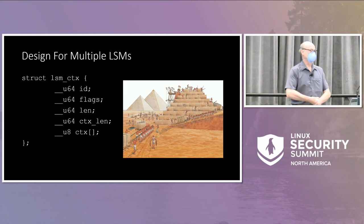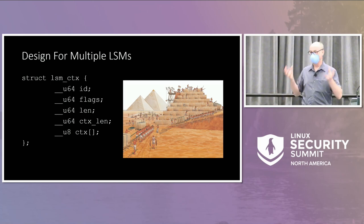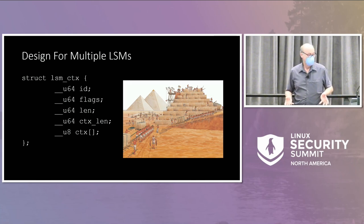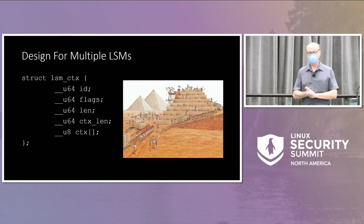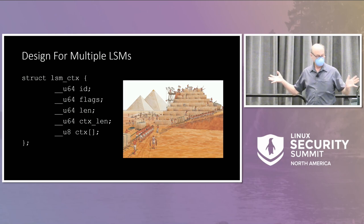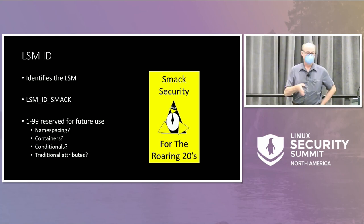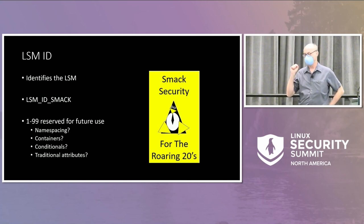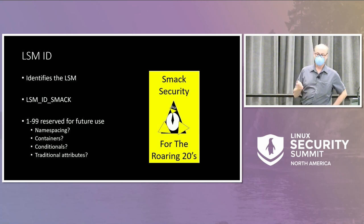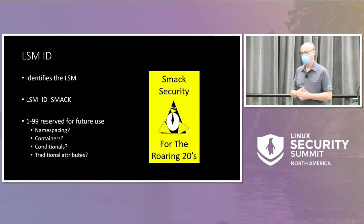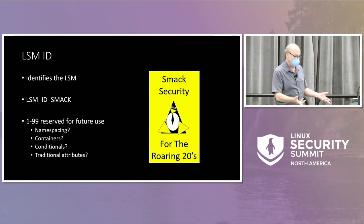As we're designing this, one of the key elements is how do we make sure it'll work when we have multiple LSMs and how do we make it generally useful and extensible going forward. So we're coming in with a structure: LSM_CTX. The first thing is the LSM ID — this is newly introduced for the system calls. To date, you've always referred to the LSM by the text of its name. By introducing an LSM identifier, we now have a numerical value to identify the data coming out with an LSM.